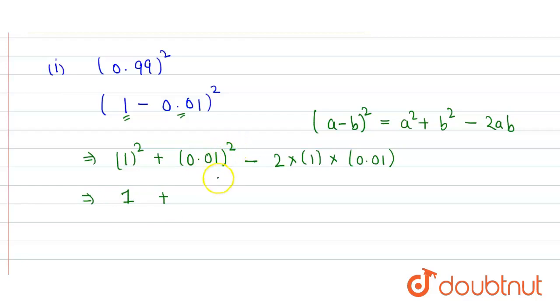So we get 4 digits after the decimal, so we get 0.0001, minus 2 into 0.01 equals 0.02.